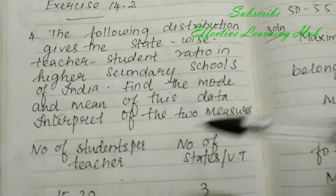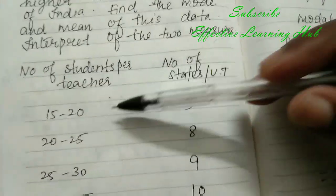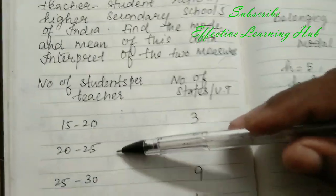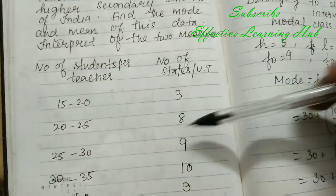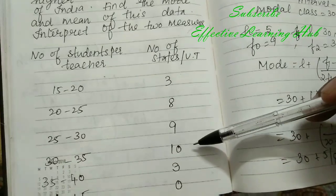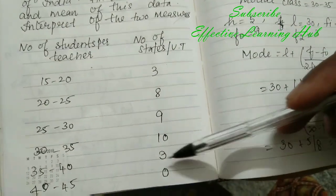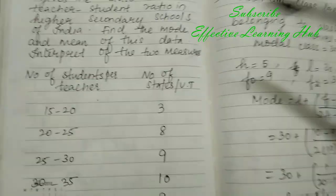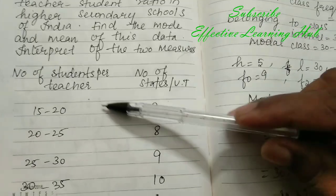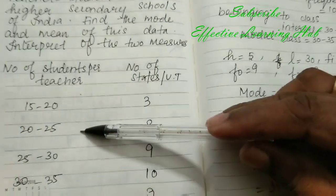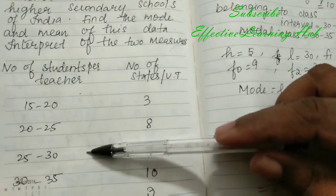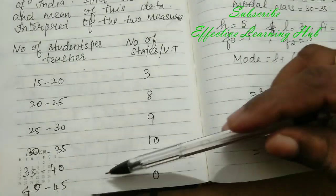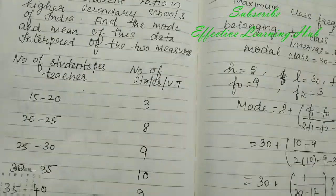Number of students per teacher: 15 to 20, number of states 3; 20 to 25, 8; 25 to 30, 9; 30 to 35, 10; 35 to 40, 3; 40 to 45, 0. First find mode.